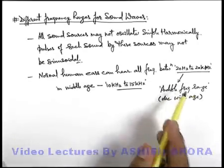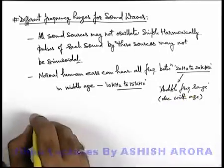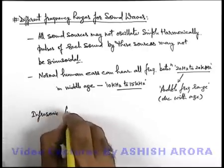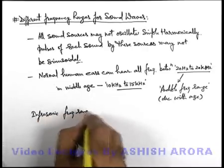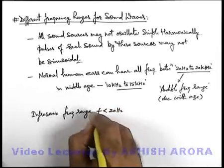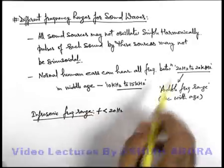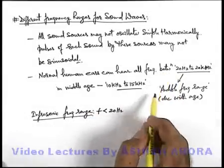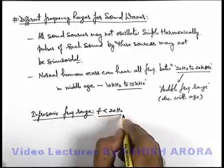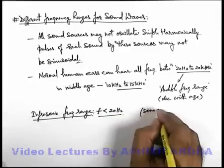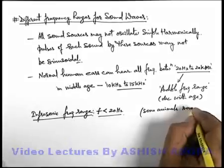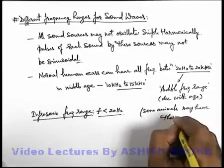Other than the audible frequency range, there are 2 other ranges. The first is the infrasonic frequency range, which includes frequencies less than 20 hertz. These cannot be heard by human ears, but some animals may be sensitive to these frequencies.